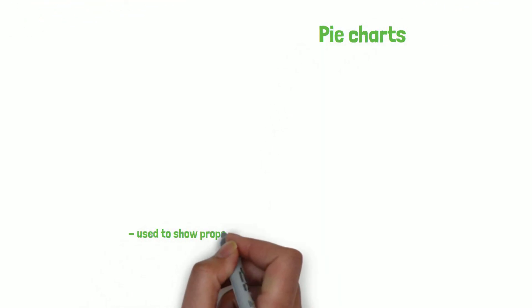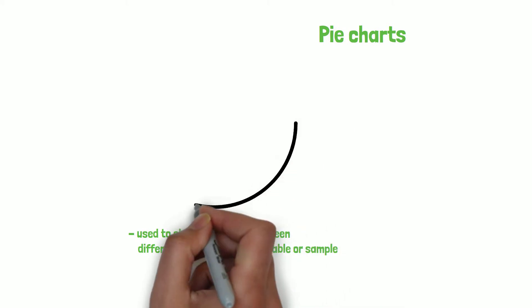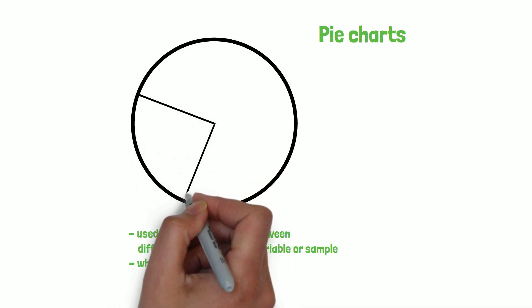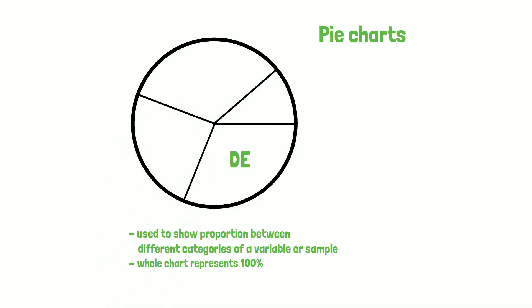Pie charts are used to show proportions, for example, between different categories of a variable or sample. The whole chart represents 100%, whereas certain degrees divided by 360 degrees of the full circle gives you the percent for the distinct groups.